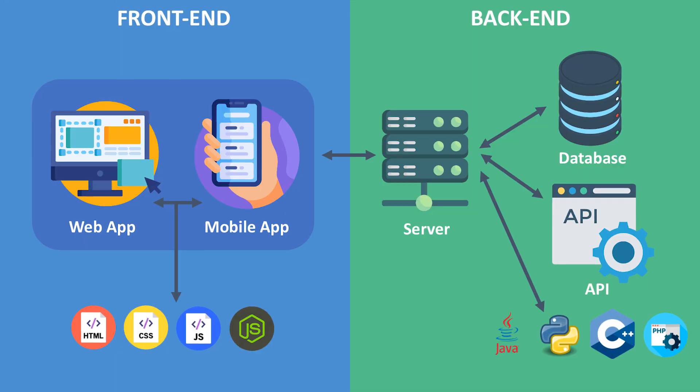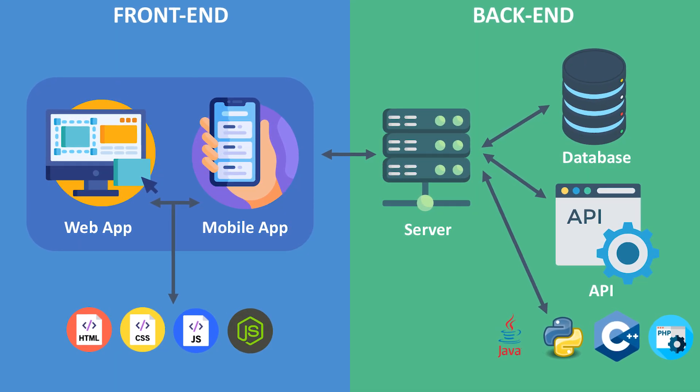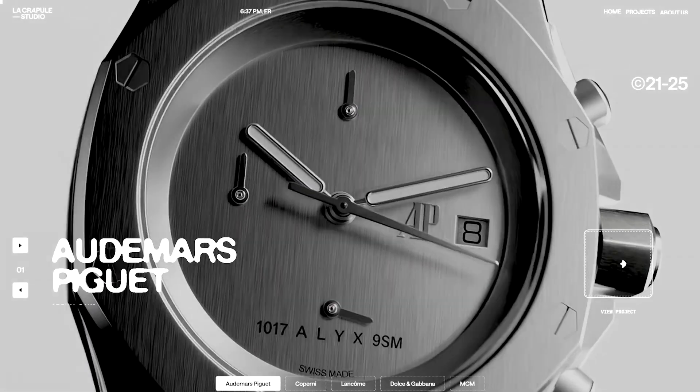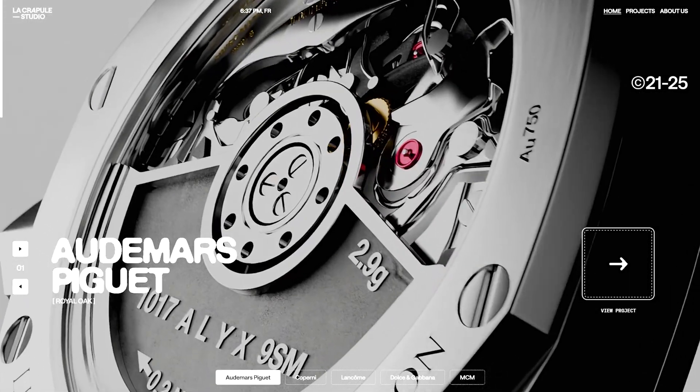When you move your arm around, your brain fires electricity to make it happen. It's the exact same thing with websites. The backend sends data, the frontend receives it. Without the backend, the frontend is the equivalent of a corpse — it looks alive, but there's nothing going on inside.